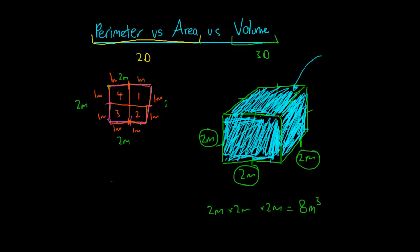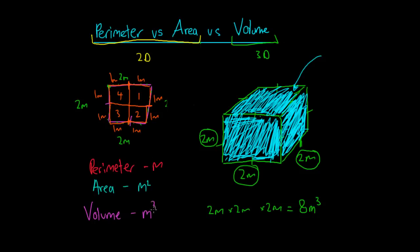So to write that down one more time: perimeter — we deal in metres, it's the length around the outside. Area is the space that a shape takes up, with units of metres squared. And volume is the amount of space inside a shape, or the total space a shape takes up, in metres cubed. So that's perimeter, area, and volume — and for more videos on specific shapes, I'll put them out soon. Thanks guys.